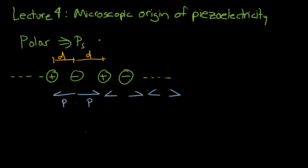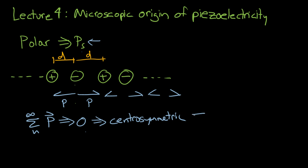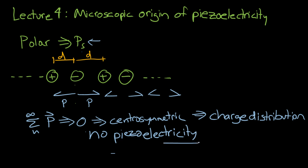The net polarization, or spontaneous polarization, is found by adding all the polarization vectors. If they equal zero, then the material is centrosymmetric with regards to the charge distribution, and therefore we have no piezoelectricity. Most materials do not have piezoelectricity.